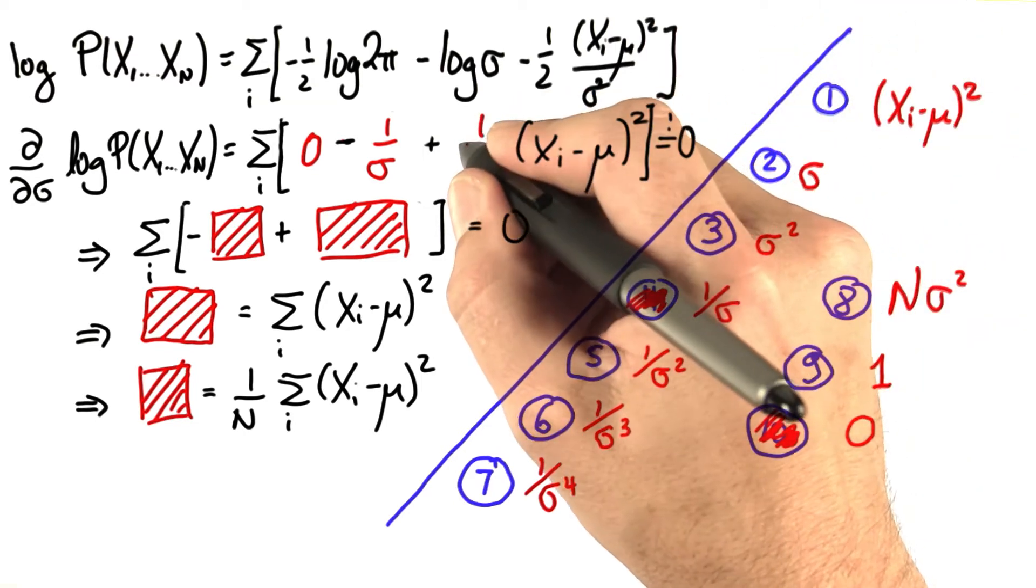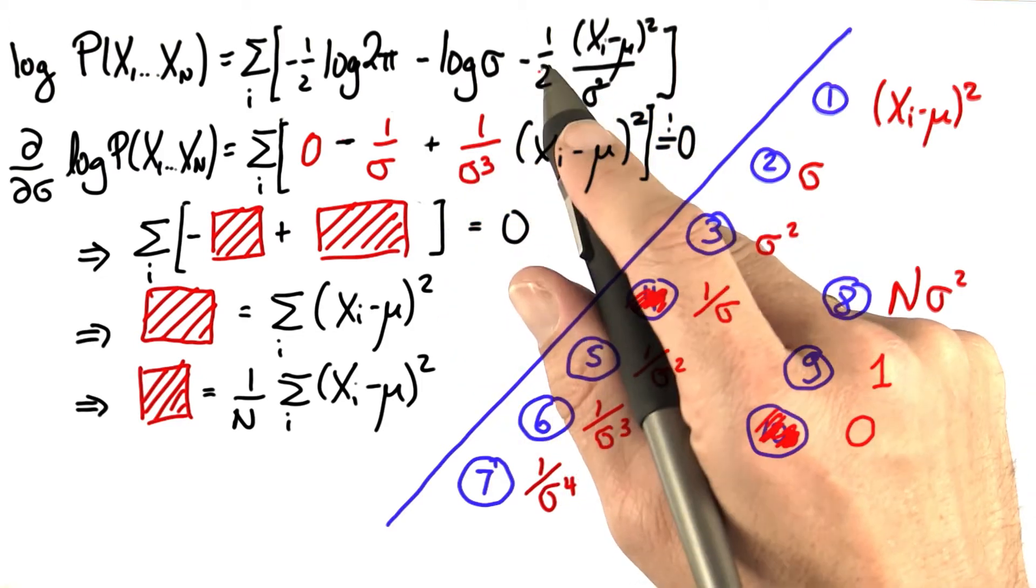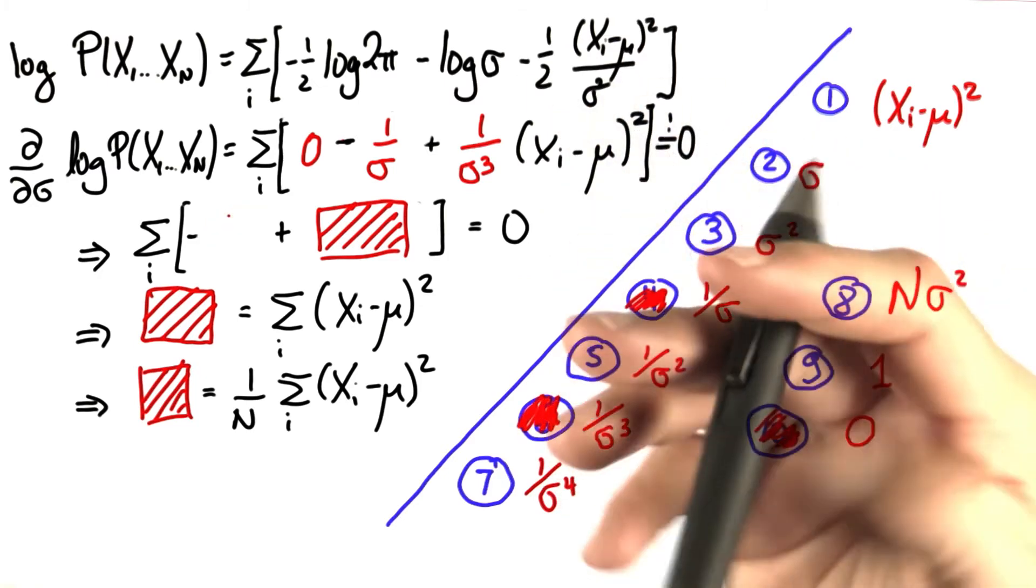That resolves to 1 over sigma to the 3, and the minus 2 multiplied in cancels the minus 1 half over here, very conveniently.